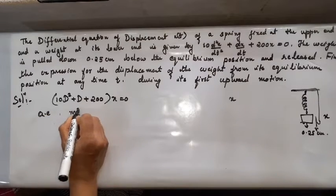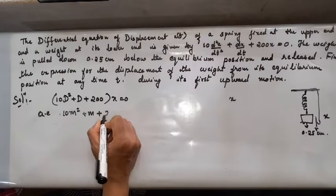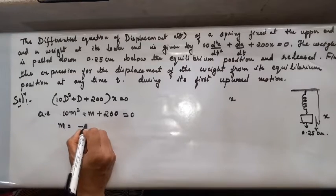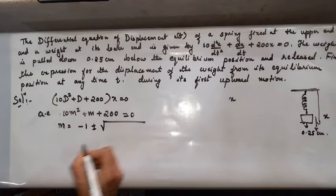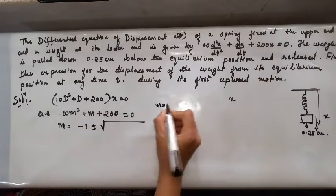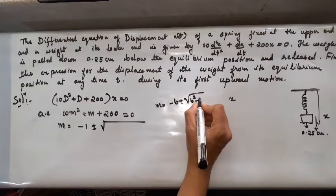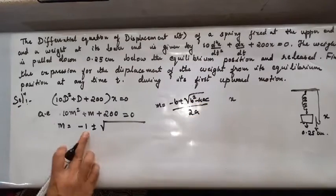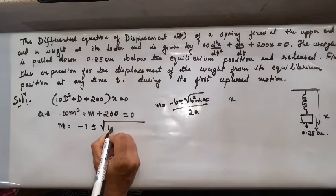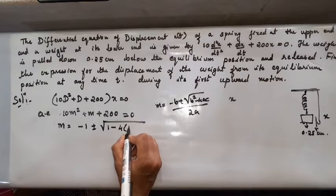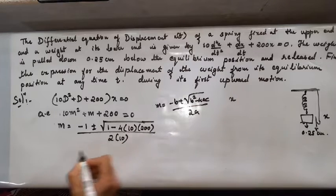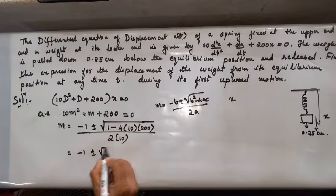Write the auxiliary equation: 10m² + m + 200 = 0. Using the quadratic formula m = (−b ± √(b²−4ac)) / 2a, with a=10, b=1, c=200, we get m = (−1 ± √(1 − 4×10×200)) / (2×10), which gives −1 ± √(1 − 8000) all over 20.